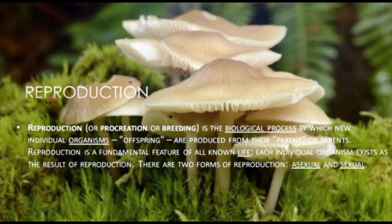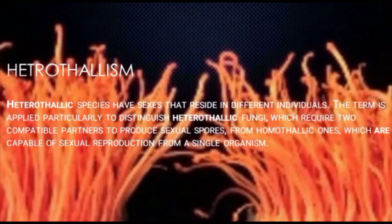There are two forms of reproduction: asexual and sexual. Heterothalism: Heterothalic species have sexes that reside in different individuals. The term is applied particularly to distinguish heterothalic fungi, which require two compatible partners to produce sexual spores, from homothalic ones, which are capable of sexual reproduction from a single organism.